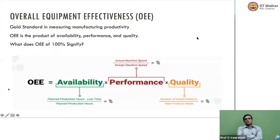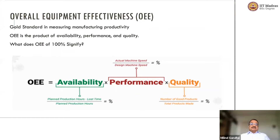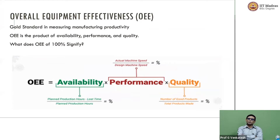It is a product of three factors. Can you pull up the slide a minute? It is a little complicated formula. It has three factors, and all of them are written in percentage terms, so eventually you will get a percentage.